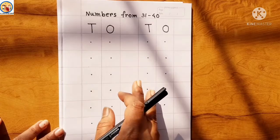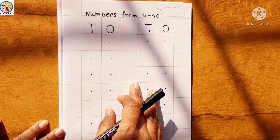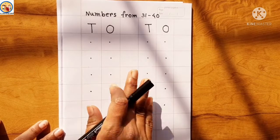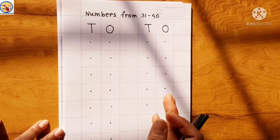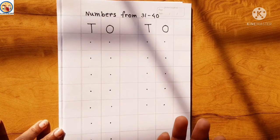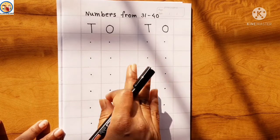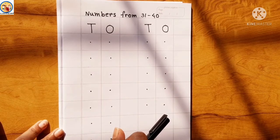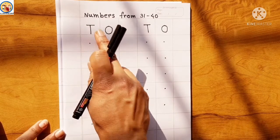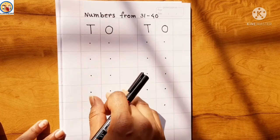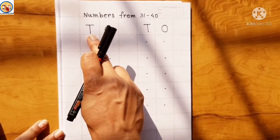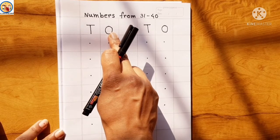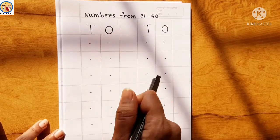Now children, we are going to learn how to write numbers in a math copy. Let's move on to the writing session. Here I have written T and O — we all know that T stands for tens and O stands for ones.